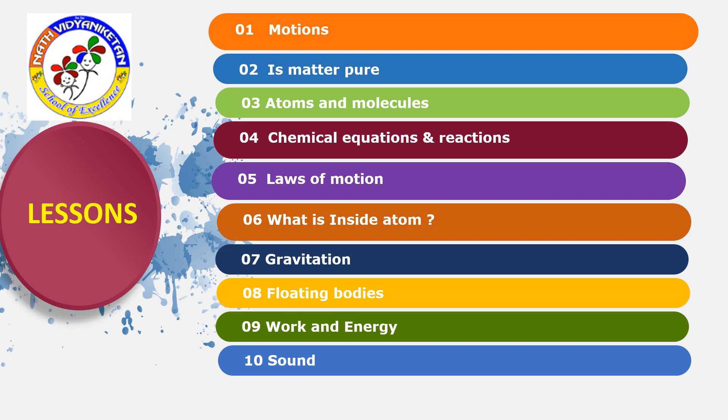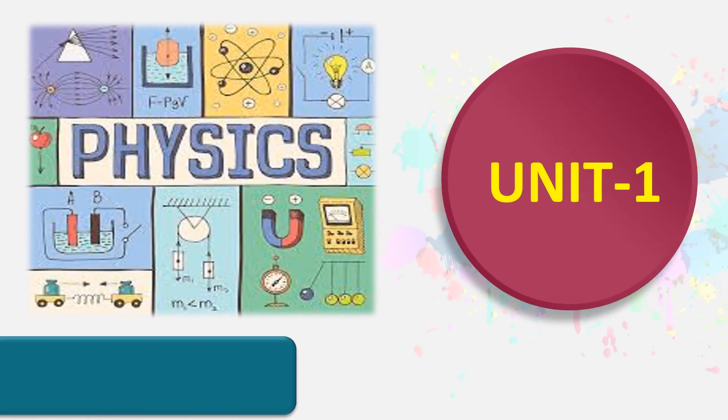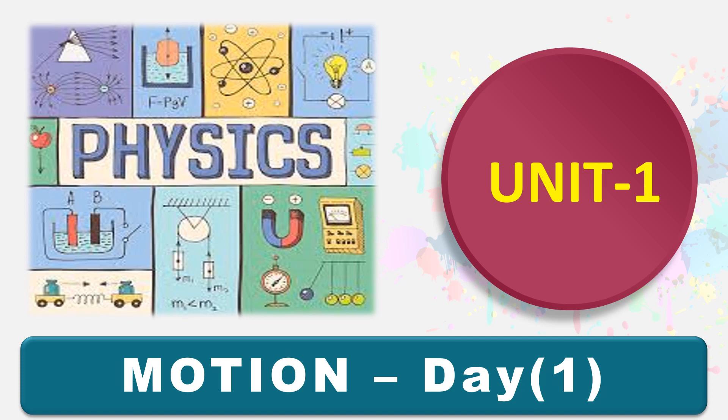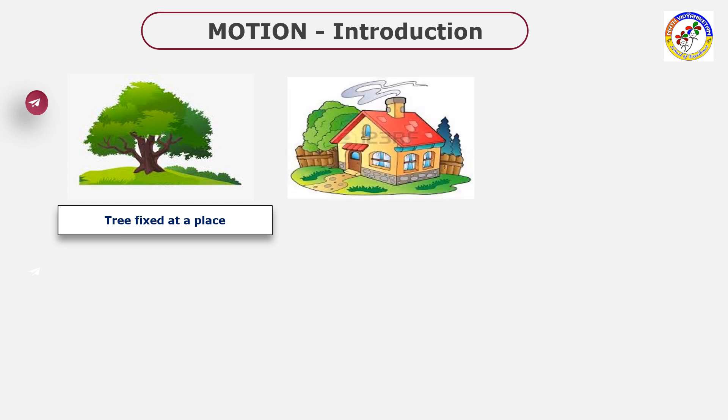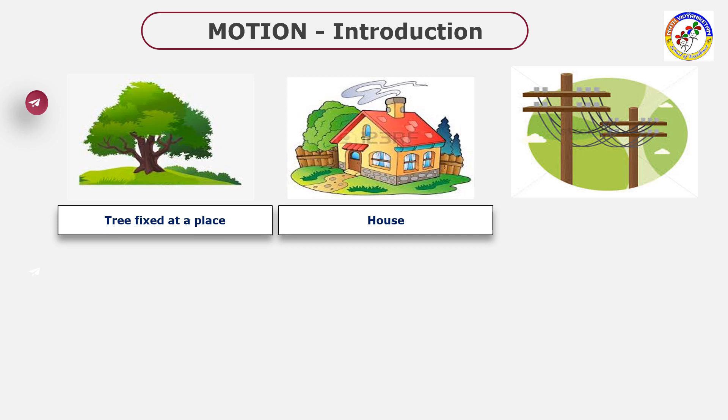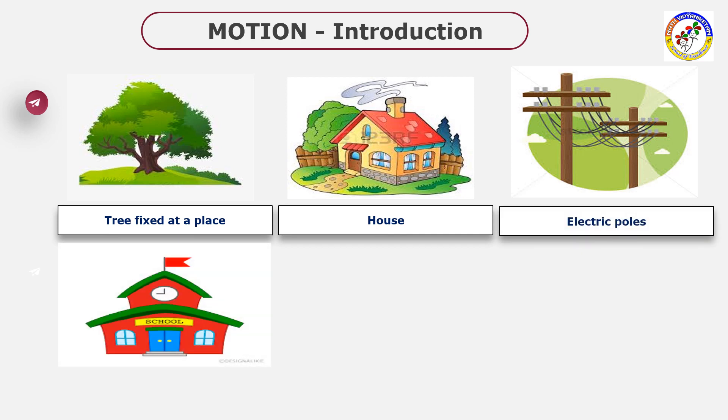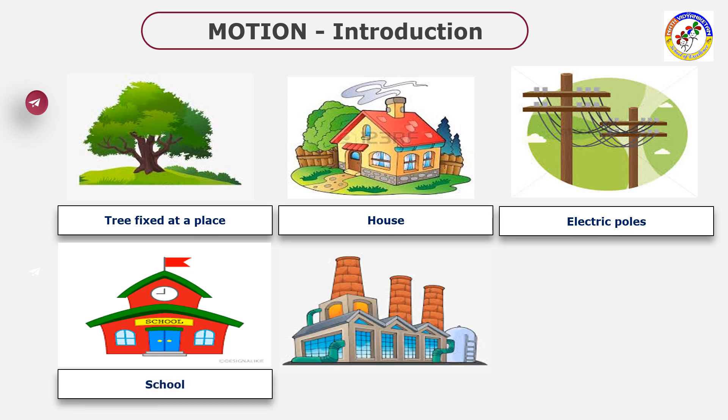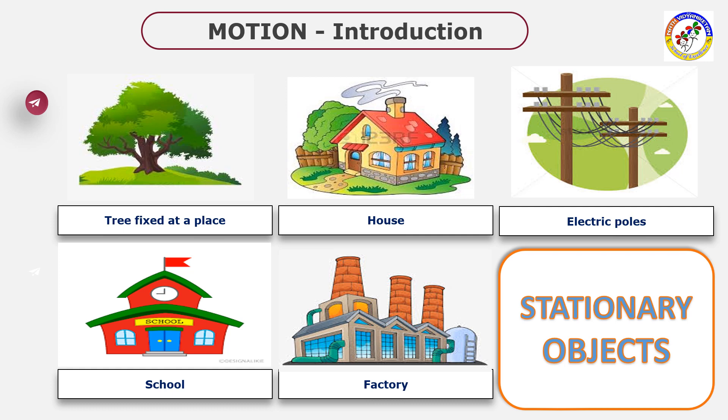Unit one, day one: Motion. Let's look at the diagram. Some examples: a tree fixed at a place, electrical poles also fixed at a place, a school, a factory - these are all called stationary objects. Stationary objects are always fixed at a place.